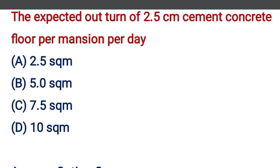The expected outturn of 2.5 cm cement concrete floor per mason per day is — option A: 2.5 m², option B: 5.0 m², option C: 7.5 m², option D: 10 m². The correct answer is option C, 7.5 m².